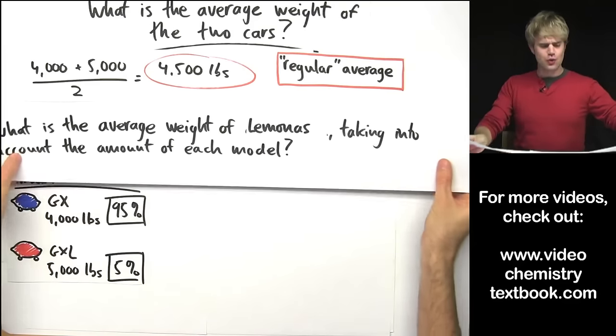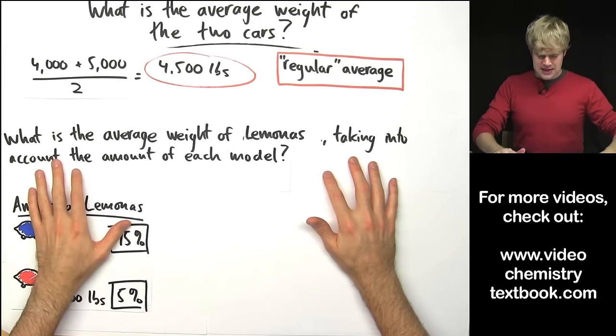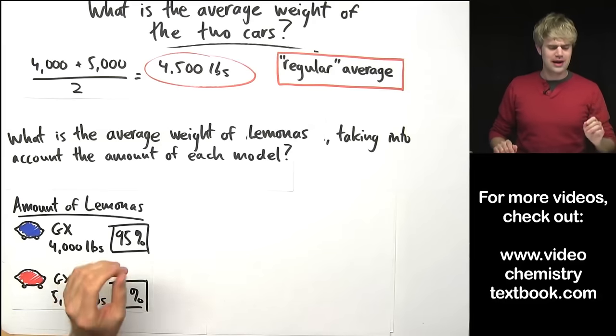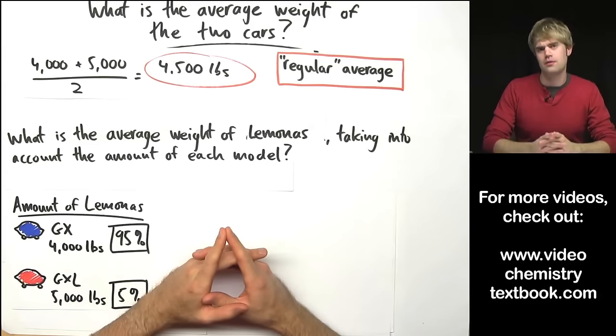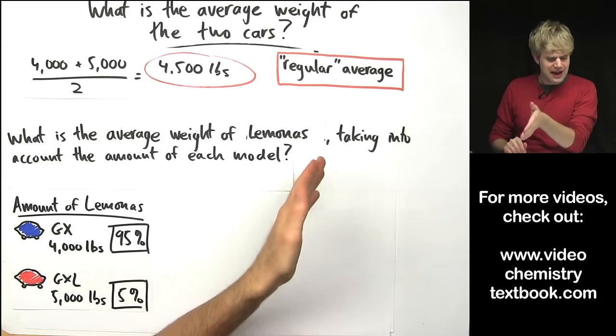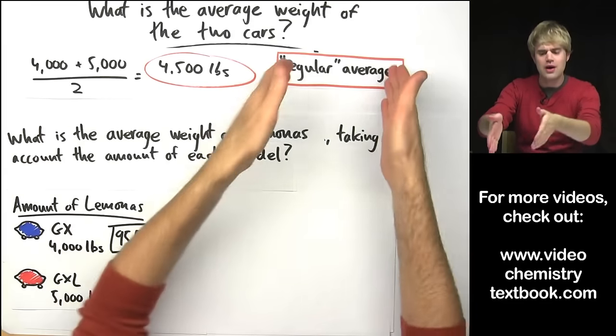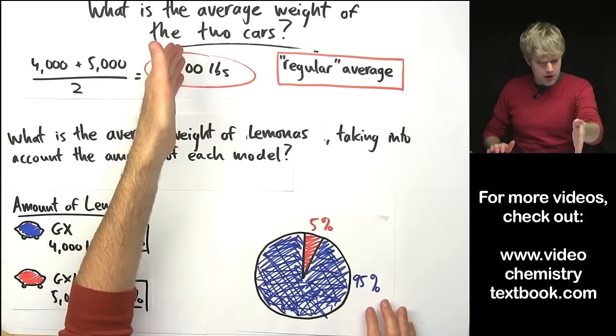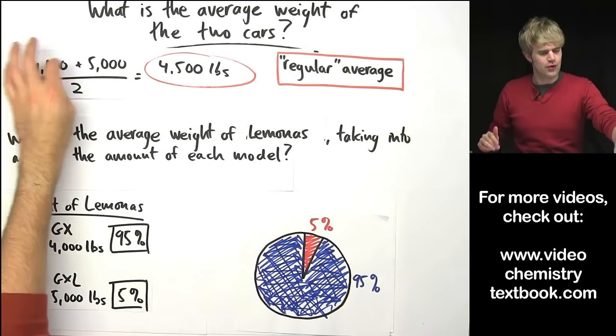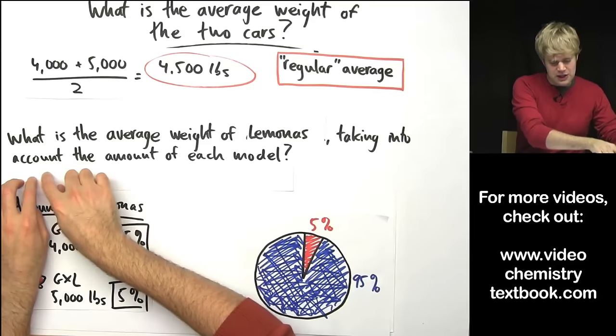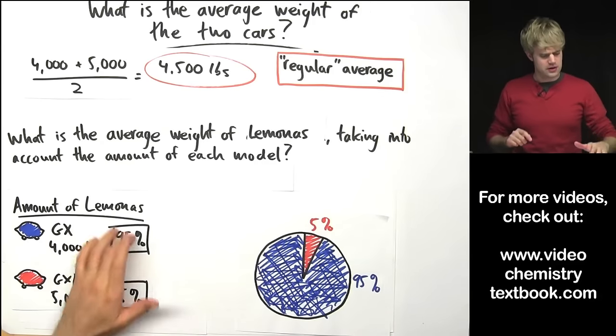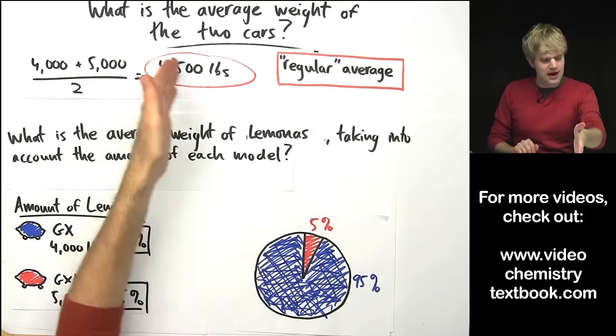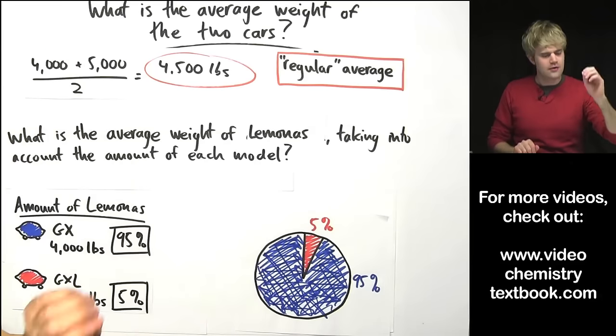Now let's take this information into account when we're asked this question. What is the average weight of Lamonas taking into account the amount of each model? Now we have to calculate an average that is different than the regular average that we did up here. Because in this case we just found a number that was right between 4,000 and 5,000. But if we're taking into account the amount of each of these, is it really fair to say that the average weight is 4,500 right in the middle of these two weights?